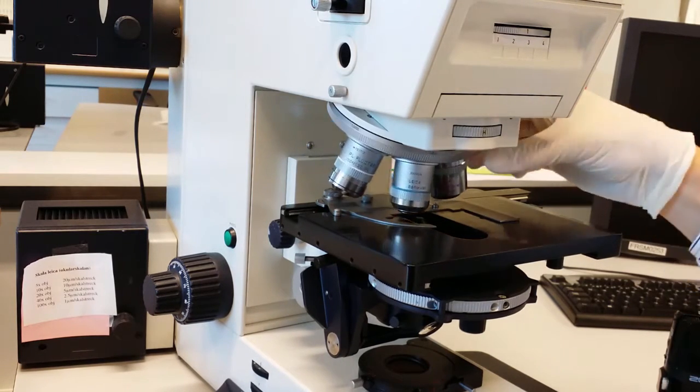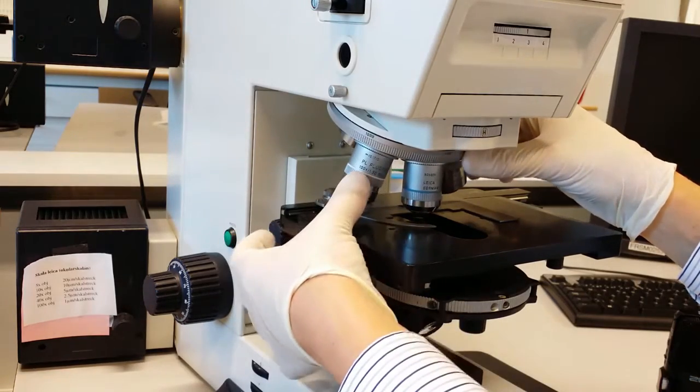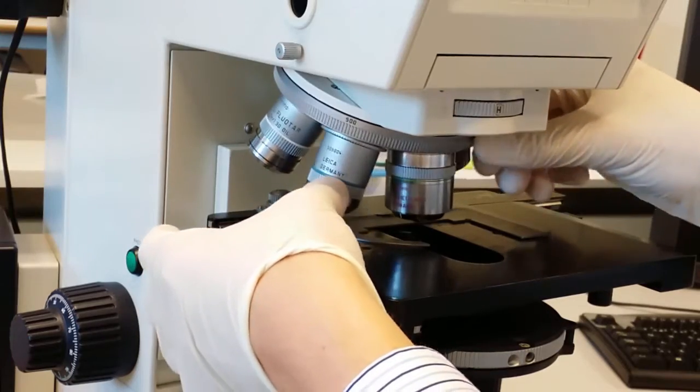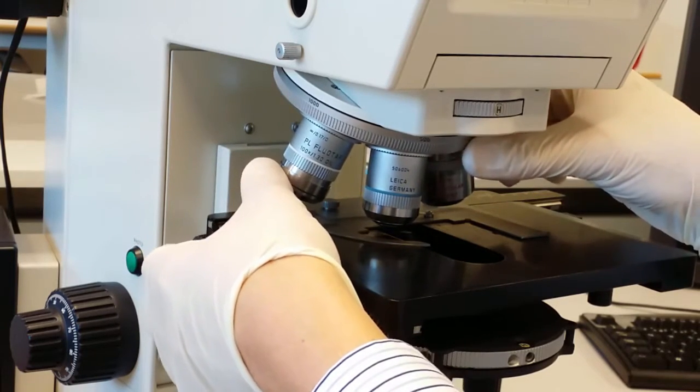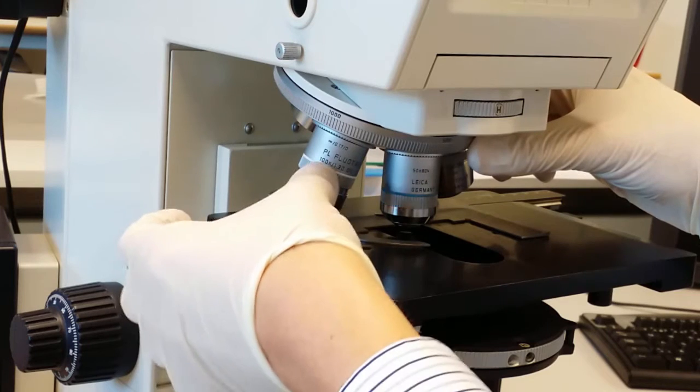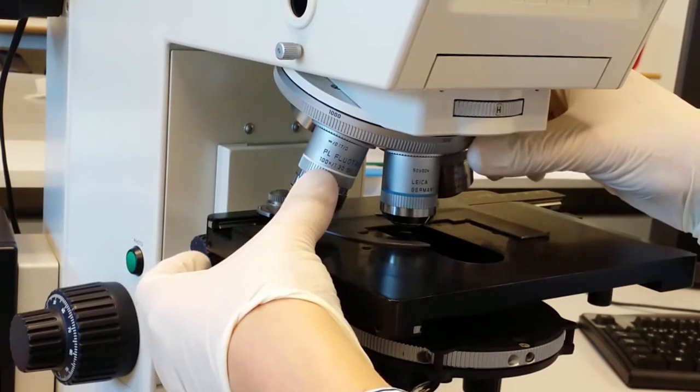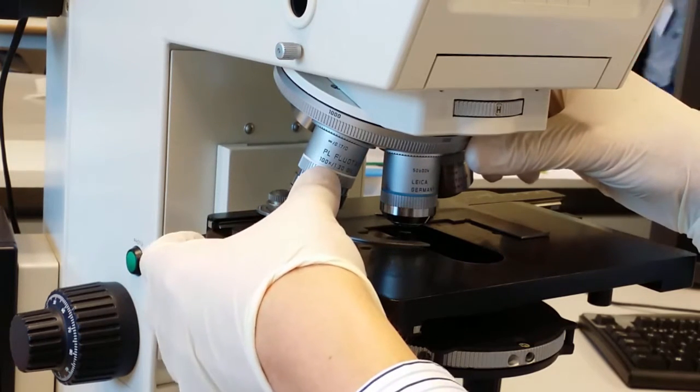Here you have the revolver with different objectives. You can look at the color of the rings here and it will tell you what kind of magnification it has and if immersion oil is needed. Here for example white rings means 100 times. And the bottom black rings says it needs oil.